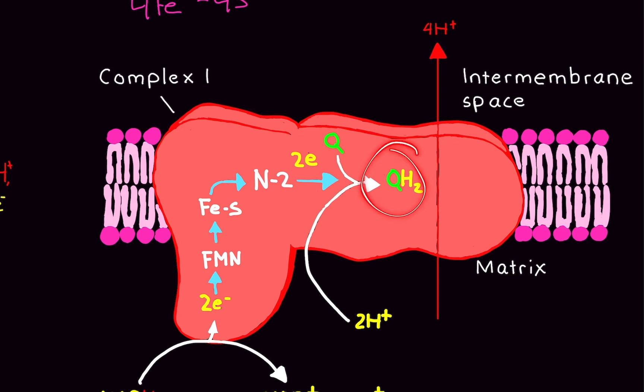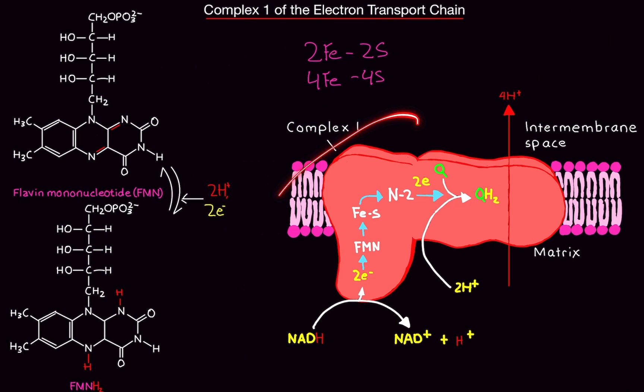Now, when it's fully reduced, something amazing happens. It basically supercharges Complex 1. Complex 1 is essentially a battery. Think about it as a battery. It's a huge battery located in the mitochondria. Now, when ubiquinone is fully reduced, it supercharges the battery. And when it gets supercharged, it has a lot of energy to help pump protons from the matrix to the inner membrane space.